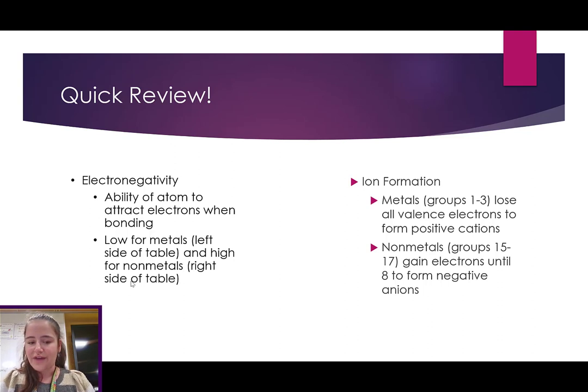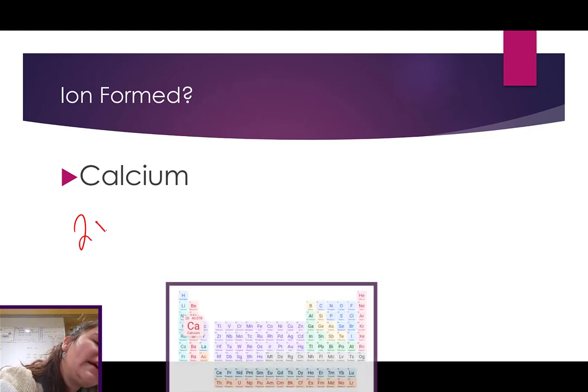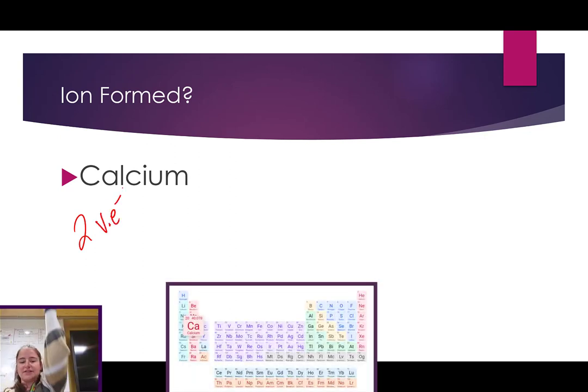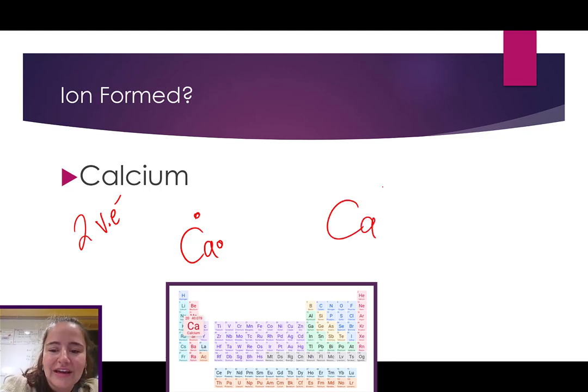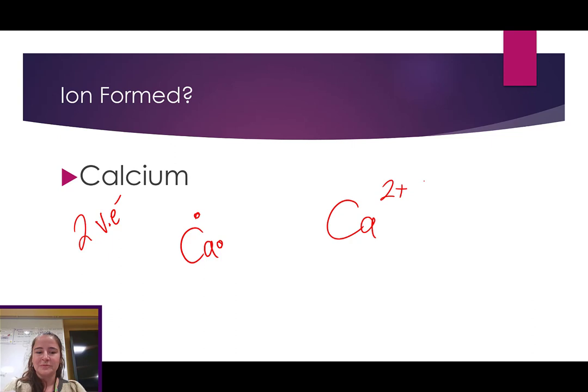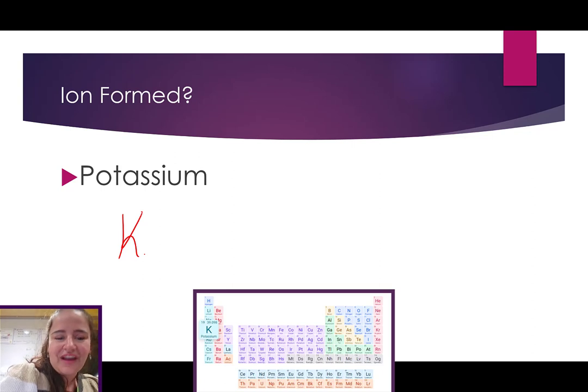So, let's review that real quick. Calcium. How many valence electrons does calcium have? Two. It has two valence electrons because it's in group two. So, if we drew its dot diagram, it would be like this. And it would lose those two and become a Ca2+ cation. What about potassium? It's got one valence electron. It will lose that one and become a K+ ion.